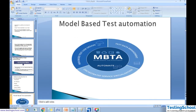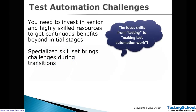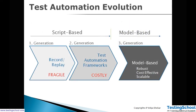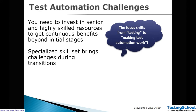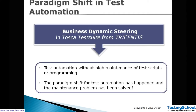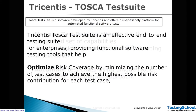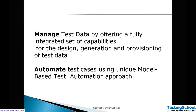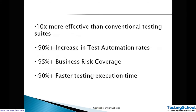Tosca is a third-generation model working on a concept called model-based architecture. Using this architecture, you can optimize risk coverage and manage test data effectively. These are some of the parameters for why we should shift to Tosca: it is ten times more effective than conventional testing, with a 90% increase in test automation rates, 95% increase in business coverage, and 90% faster execution time.